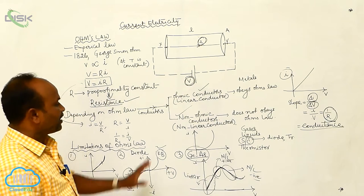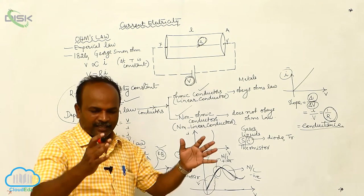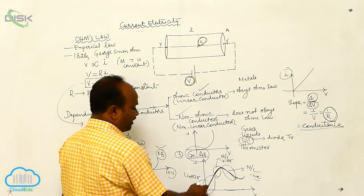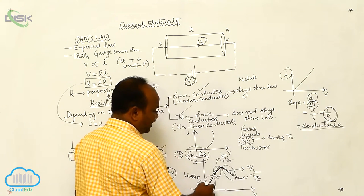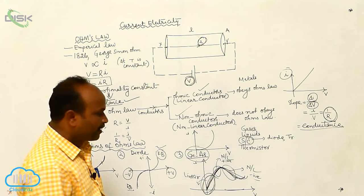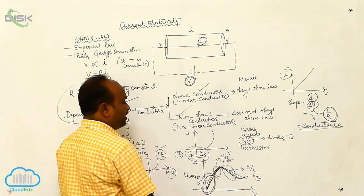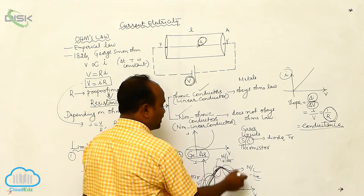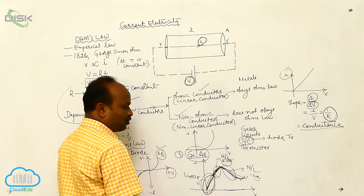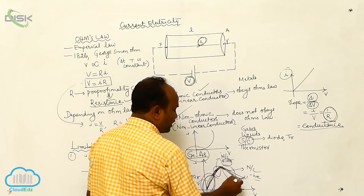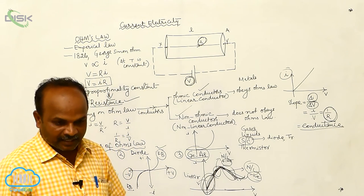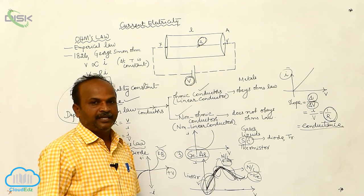For certain metal alloys such as gallium arsenide, the V-I graph has three regions: in the first region, the relation between V and I is linear; in the second region, the V-I graph is non-linear with a positive slope; in the third region, the V-I graph is non-linear with a negative slope. These are the examples where Ohm's law is violated.